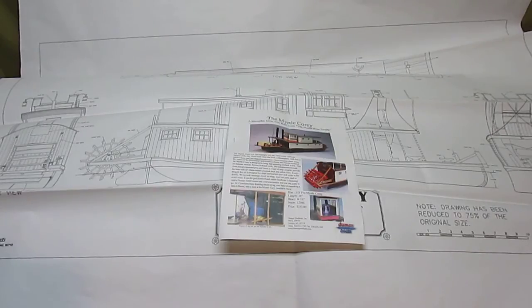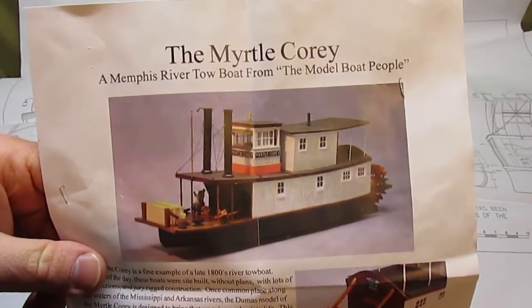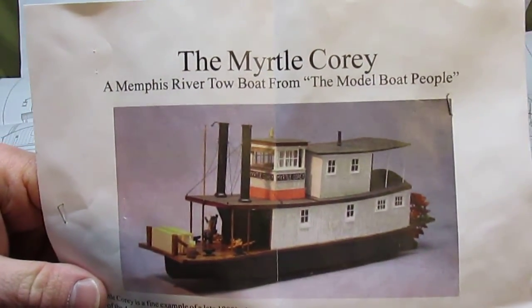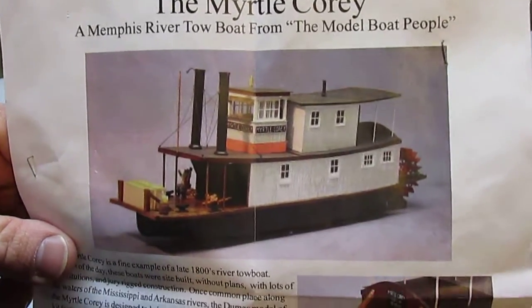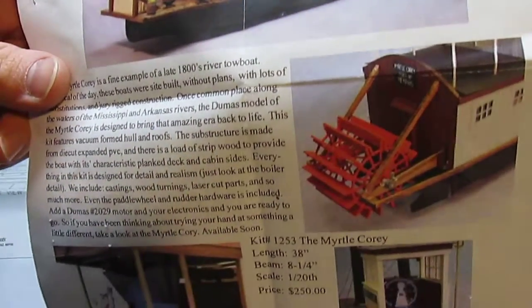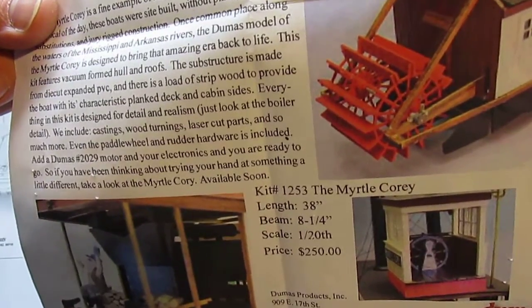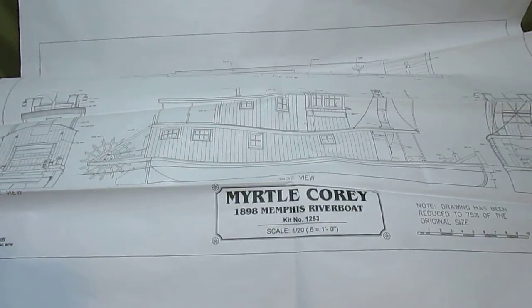This is a radio-controlled, steam-operated paddle wheeler, and the kit is designed by Dumas, D-U-M-A-S. It's called the Myrtle Corey, and it's a type of towboat and pushboat that would have been used in the southern states back in the days of steam. You can see that it's going to build into an absolutely beautiful ship, and you can see the dimensions right there. 38 inches long and 8 and a quarter inches wide. Now, this kit normally retails right now in the sub-$300 range just for the kit, and that's not everything you need.